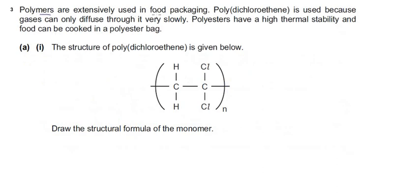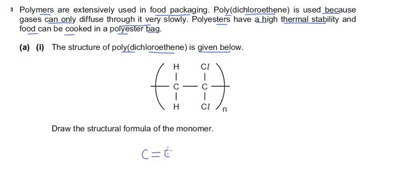The next question says polymers are extensively used in food packaging. Polydichloroethene is used because gases can only diffuse through it very slowly. Polyesters have high thermal stability and food can be cooked in polyester bags. The first sub-question gives the structure of polydichloroethene and asks us to draw the structural formula of the monomer. The monomer has two carbons with a double bond: H2C=CCl2, or written as CH2=CCl2.